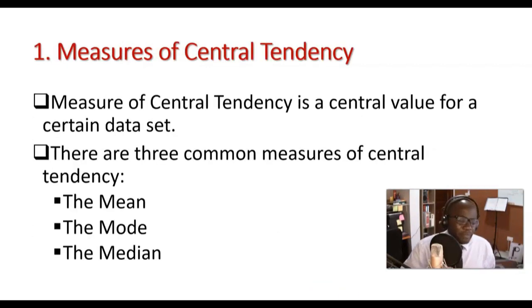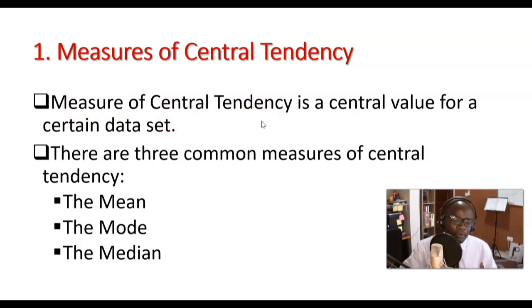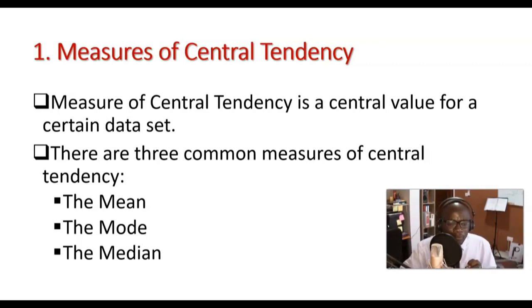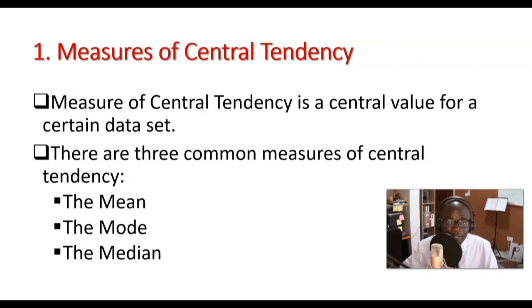What does the term 'measure of central tendency' mean? A measure of central tendency is a central value or a number from a data set. For example, if you have a list of numbers like two, three, six, seven — the value which appears in the center of that list is called the measure of central tendency, in other words the central figure or central value.